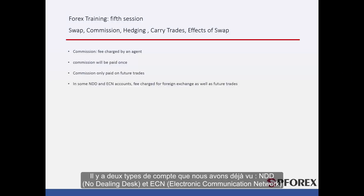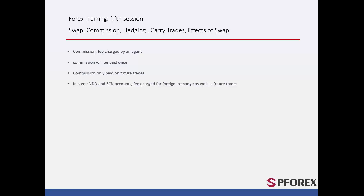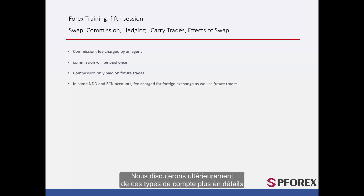There are two types of account we have not previously looked at: NDD and ECN. In these accounts there is a commission for a broker in foreign exchange trades, the same as in future trades. We will discuss these account types in more detail in the future.